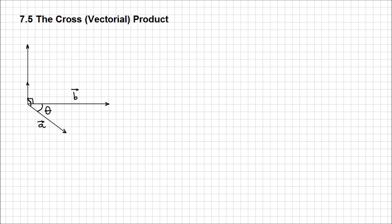As you can see, I have two vectors a and b that form an angle theta. The cross product between these two vectors, by definition, is going to be that vector that is orthogonal on both a and b. The cross product between a and b is going to be magnitude of a, magnitude of b, sine of theta.